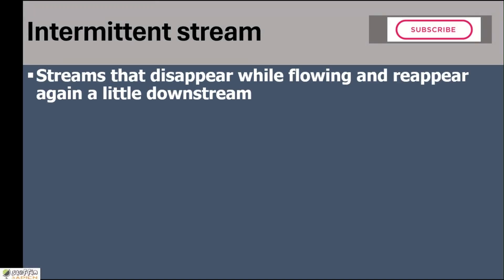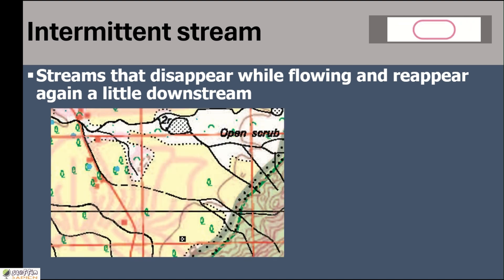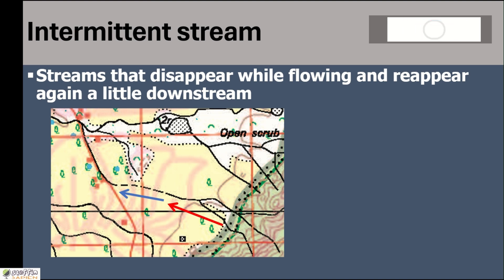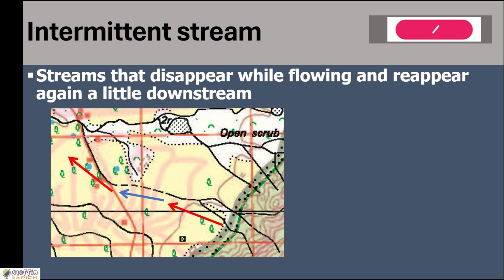Next is intermittent stream — streams that disappear while flowing and reappear again a little downstream. Such streams are called intermittent streams. Here in the middle, we have a river flowing normally. But after reaching a certain distance, it disappears. The dashes show the river is disappearing — it is flowing through the ground. After flowing a certain distance underground, it again reappears and flows as a normal river.